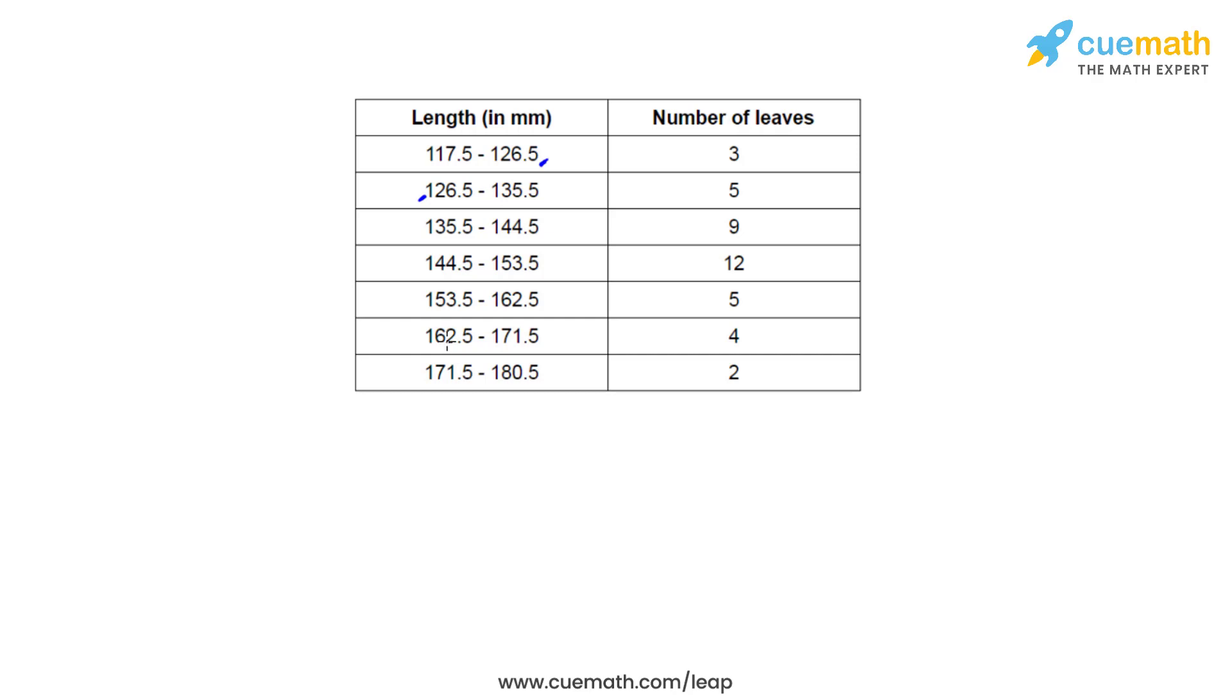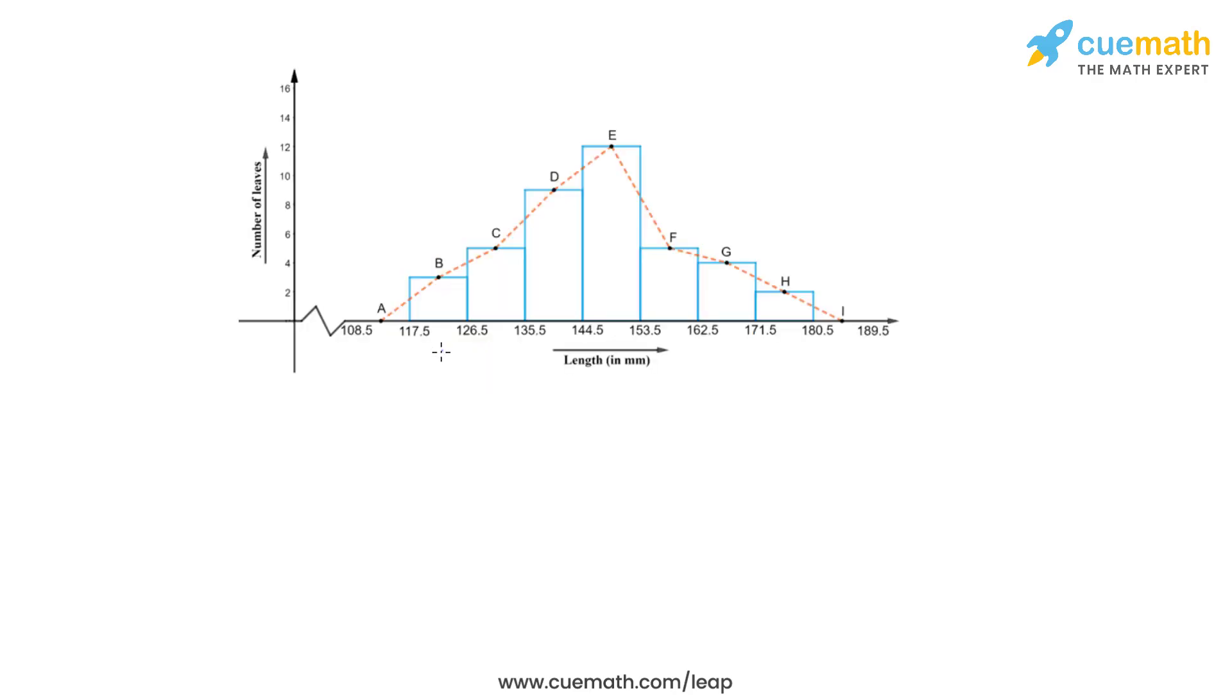So the histogram will look like this. In this histogram we can see that we have represented the length of leaves on the x-axis and the number of leaves on the y-axis. The scale on y-axis is one unit represents two leaves, and that is because the least number of leaves that we had were 2 and the maximum number of leaves that we had were 12.